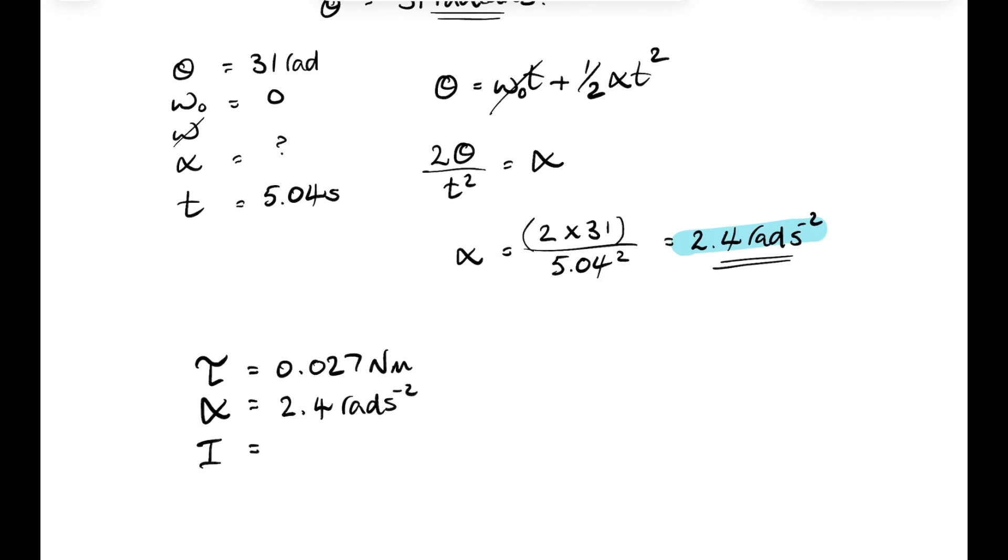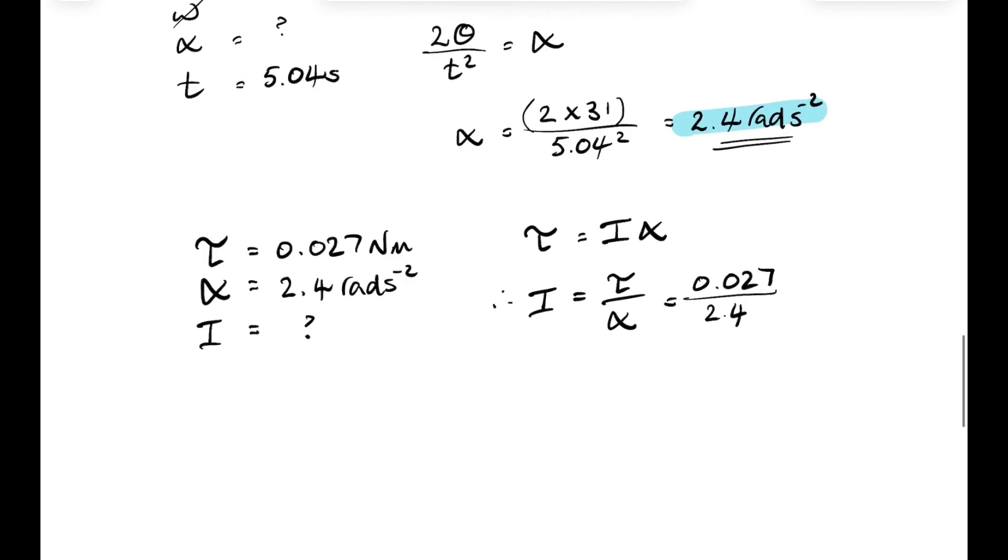We can work out the moment of inertia of the disk. So tau equals I alpha. Now I will be equal to tau over alpha. And the torque was 0.027 and the angular acceleration was 2.4. And if you do that in your calculator, you will get an answer for the moment of inertia of the disk of 0.011 kilogram meters squared.